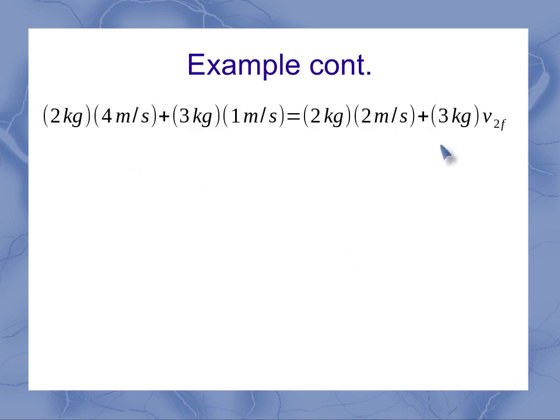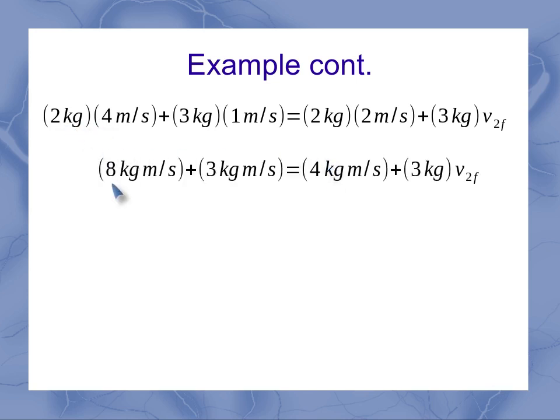So let's start with that equation and start simplifying it. First thing I can do is, each time I've got a mass and a velocity, I can do that multiplication. So my 2 times 4 becomes 8, my 3 times 1 becomes 3, my 2 times 2 becomes 4. Keeping track of my units to realize that these are momentum units now, kilogram meters per second. On our last term, we still just have 3 kg and the unknown velocity v2f.